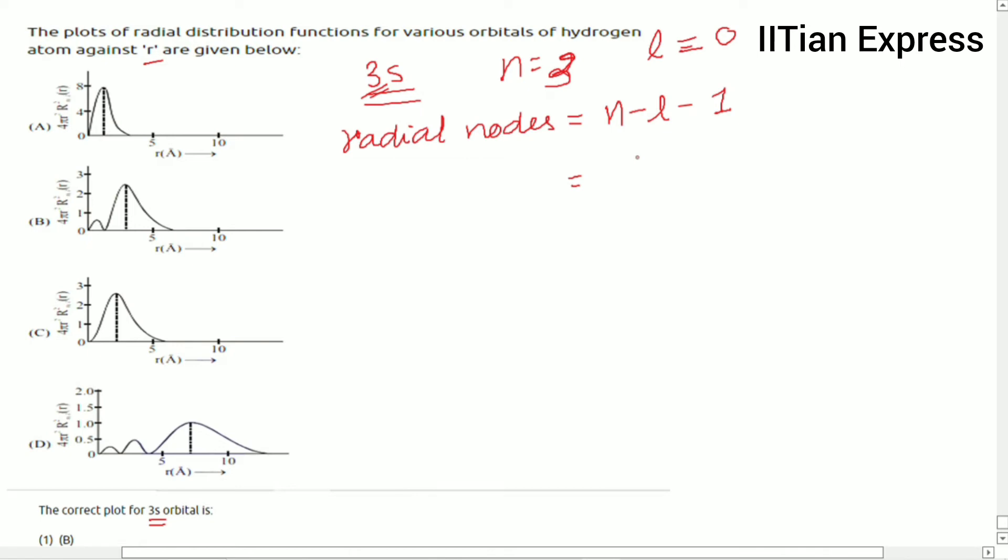If we put the values, we get 3 minus 0 minus 1 equals 2. So we have two radial nodes.